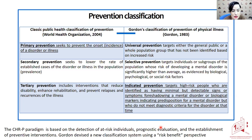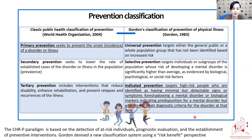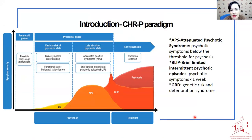So we are talking here about the clinical high-risk for psychosis paradigm, and it's based on the detection of at-risk individuals, prognostic evaluation, and the establishment of preventing interventions. This kind of classification is more useful for us. Obviously, we are talking about young people because we are talking about prevention. The clinical high-risk for psychosis group includes three groups of subjects.